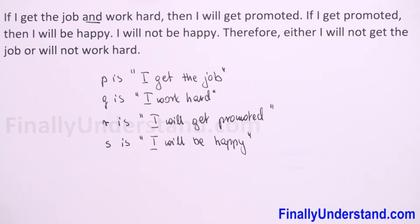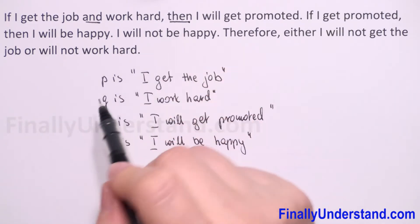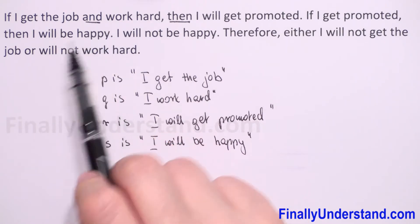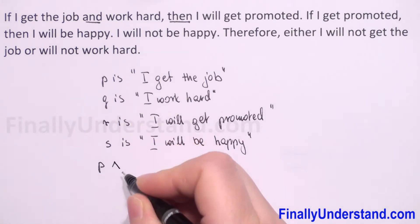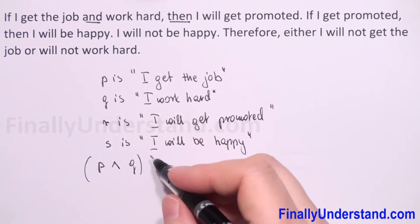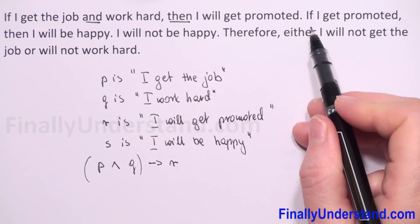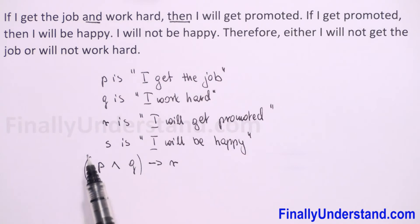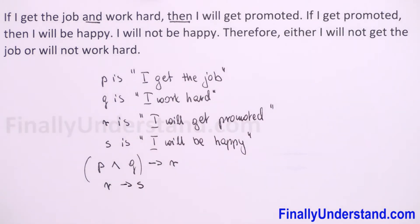Now we can rewrite our argument in symbolic form. We have the first conditional statement: inside the conditional we first have a conjunction statement. So we have 'I get the job,' which is P, and 'work hard,' which is Q — so P and Q. Next, this implies 'I will get promoted,' which is R. So the first premise is: (P ∧ Q) → R.